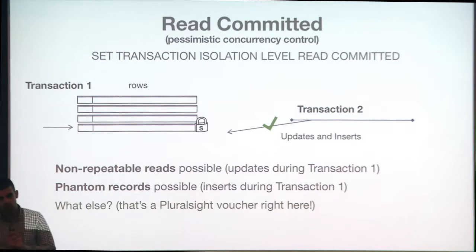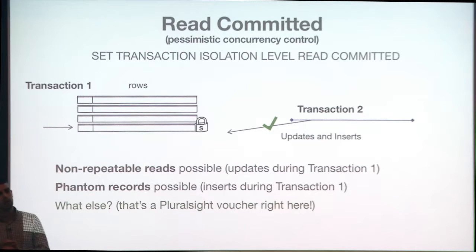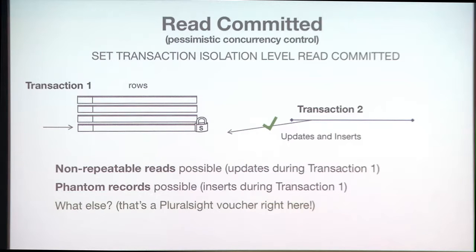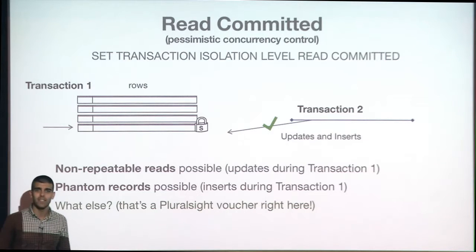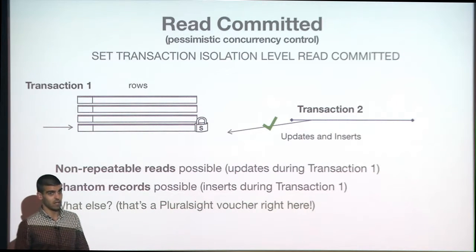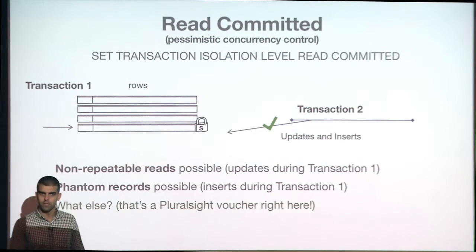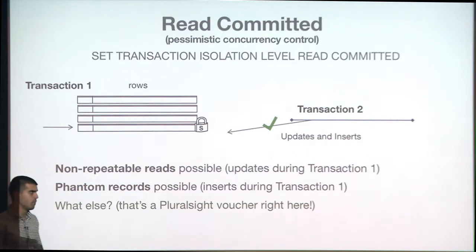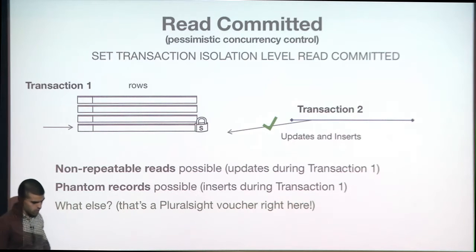What else can happen in read committed? Something that looks strange but isn't defined as a concurrency phenomenon: you can read the same row twice in the same SELECT, or you can miss a row entirely from your result set. You'll see that in the demo.